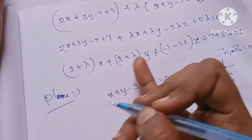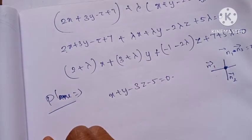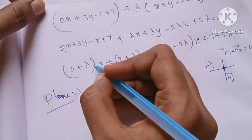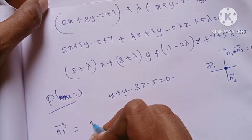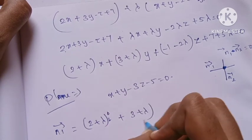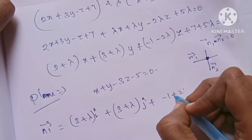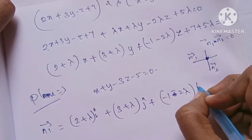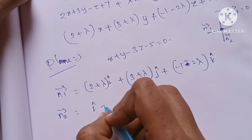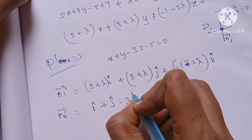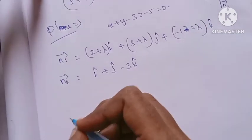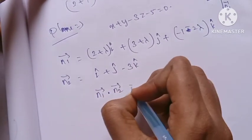The coefficients of x, y, z give us the normal vectors. n1 vector has components (2 plus lambda), (3 plus lambda), (minus 1 minus 2 lambda). n2 vector is i, j, minus 3k. Setting n1 dot n2 equal to zero.